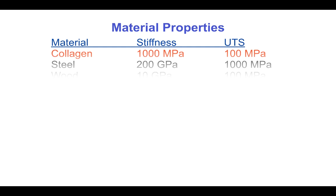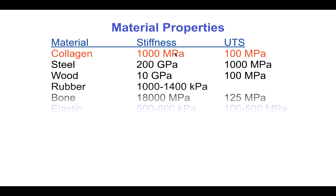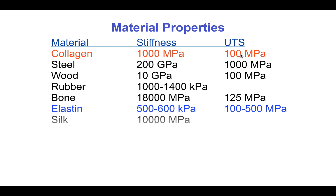Let's compare the material properties of collagen and elastin with those of some other materials. The stiffness of collagen is about 1 gigapascal and its ultimate tensile stress is about 100 megapascals. This compares with a stiffness of steel of 200 gigapascals, 10 gigapascals for wood, but only 1 megapascal for rubber. Bone is about 18 gigapascals, and the strength properties of bone are quite similar to the ultimate tensile stress of collagen, similar to that of wood but an order of magnitude lower than steel.